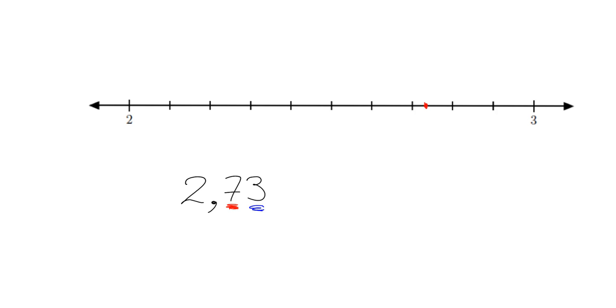If I wanted to do it exactly, I'd have to get my ruler around and measure and actually cut this thing properly up into ten exactly the same little pieces and count three of them. But this gives me a good enough picture of where 2.73 lies.